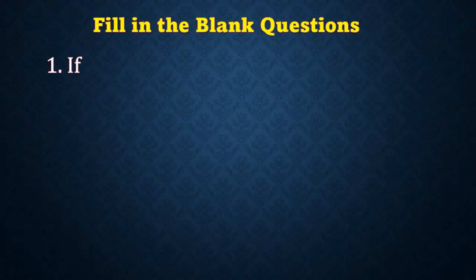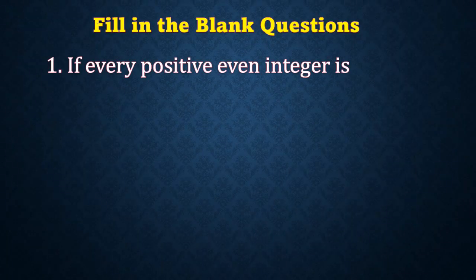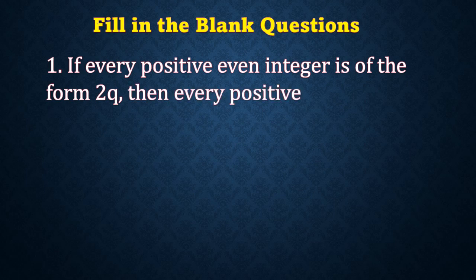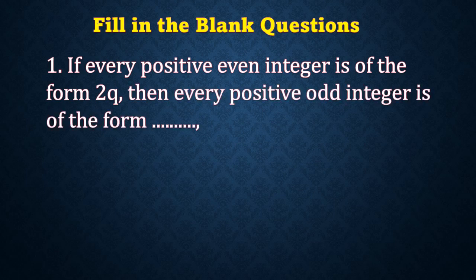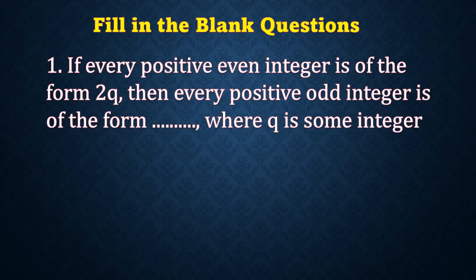If every positive even integer is of the form 2q, then every positive odd integer is of the form dash, where q is some integer.